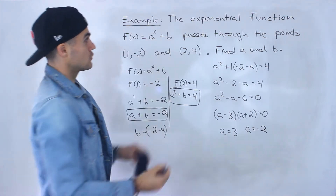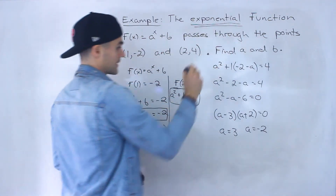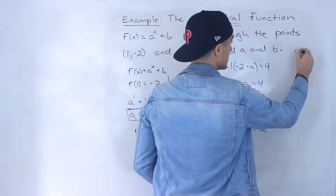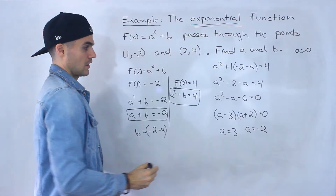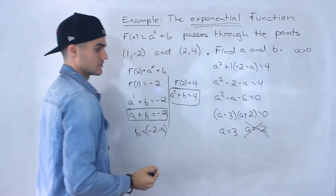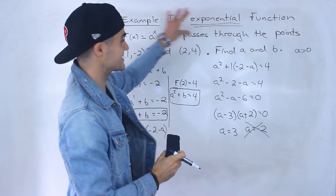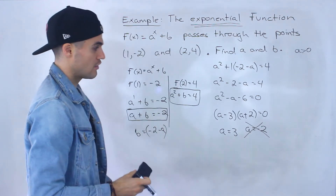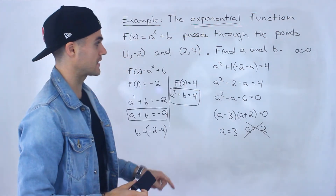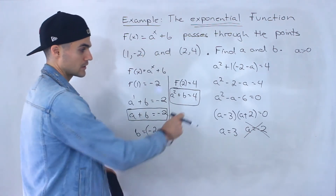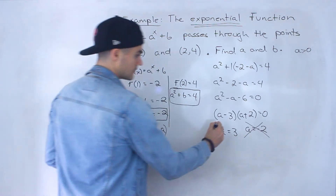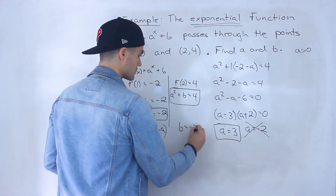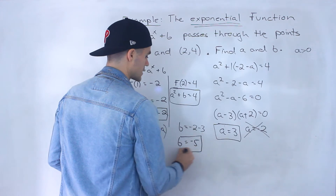Now because we're dealing with an exponential function, the a value can't be negative 2. Remember, the base for an exponential function has to be greater than 0. So we ignore that solution. Even though if this wasn't stated and we were dealing with some abstract function or relation, we could include it — however, we're told it's an exponential function, so the base must be greater than 0. We ignore negative 2 and work only with a equals 3. To find b, we just plug in a equals 3: negative 2 minus 3 equals negative 5.